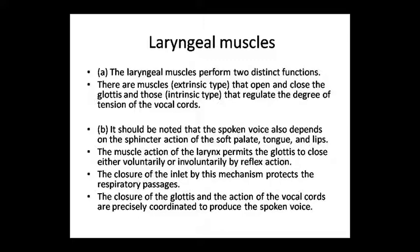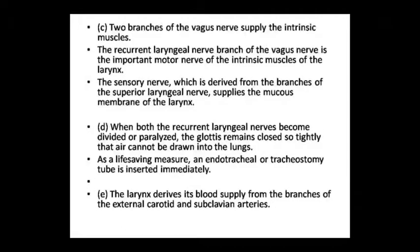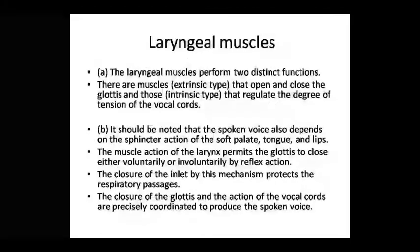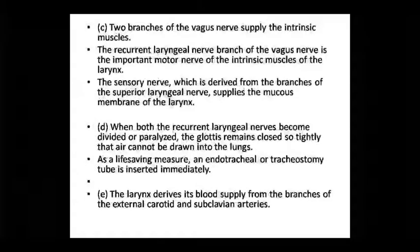The vagus nerve supplies the intrinsic muscles. The vagus nerve gives two branches: the recurrent laryngeal nerve and the sensory nerve. The recurrent laryngeal nerve, which is a branch of the vagus nerve, is an important motor nerve supplying the intrinsic muscles. The sensory nerve is the superior laryngeal nerve, which supplies the mucous membrane.